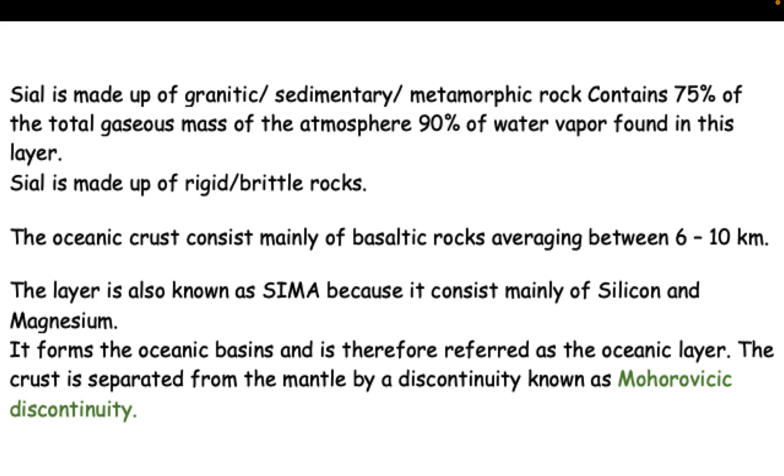SIAL is made up of rigid brittle rocks. The oceanic crust consists mainly of basaltic rocks averaging between 6 to 10 km. The layer is also known as SIMA because it consists mainly of silicon and magnesium. It forms the oceanic basins and is therefore referred as the oceanic layer. The crust is separated from the mantle by a discontinuity known as Mohorovicic discontinuity.